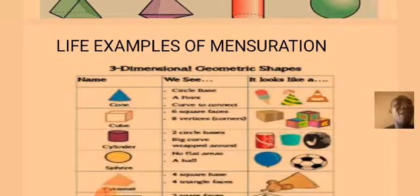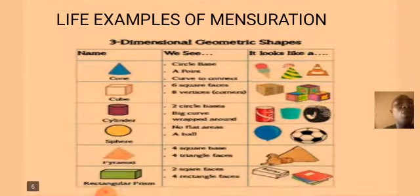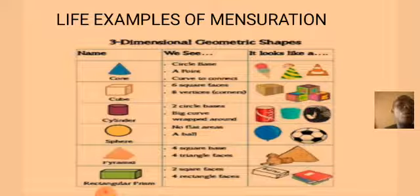Let's see some examples at home that look like these solid mensuration shapes. The first one is cone. What object at home looks like a cone? Ice cream — it looks like a cone. That means a cone has a circular base and a curved surface connecting to the apex.